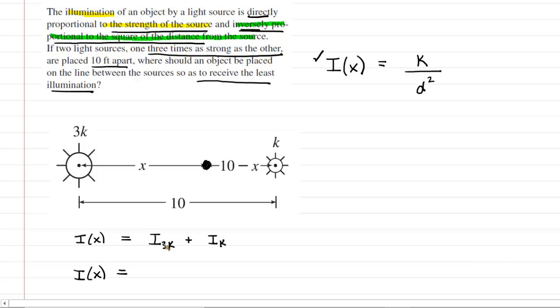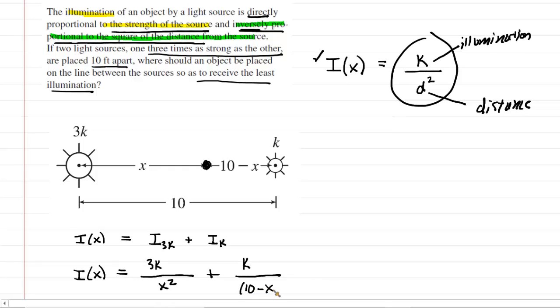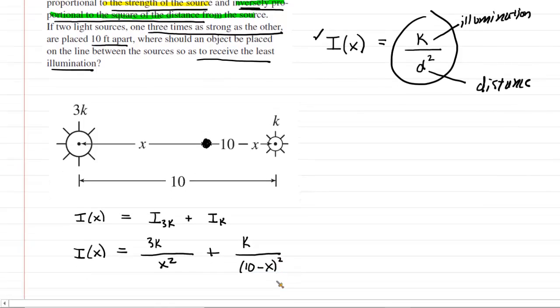Now for the illumination of the 3K source, and remember you're using this equation right here, you're going to put the illumination strength in the numerator and then the distance in the denominator squared. So for the 3K source, we've said the illumination is 3K and then divided by the distance. From our diagram, that distance is just X. So it's X squared plus the illumination supplied by the dimmer source. That was just 1K divided by the distance from that dimmer source to our object squared. We can see that that's 10 minus X squared. There is our illumination equation.